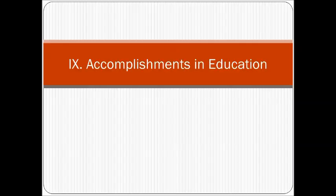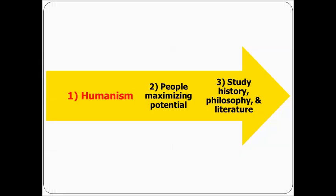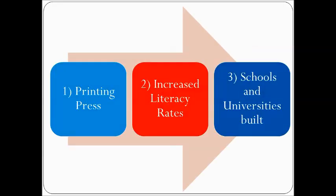Accomplishments in education: humanism makes people maximize their potential, so there is lots of studying of history, philosophy, and literature — what we call the humanities today. The printing press leads to increased literacy rates, meaning more people can read and write, which eventually leads to more schools and universities being built. We see an increase in education.